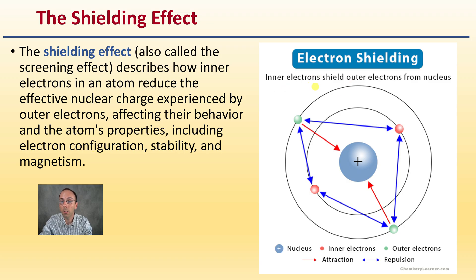As we see here, the inner electrons are shielding outer electrons from the nucleus. The blue lines represent repulsion, the red lines represent attraction.